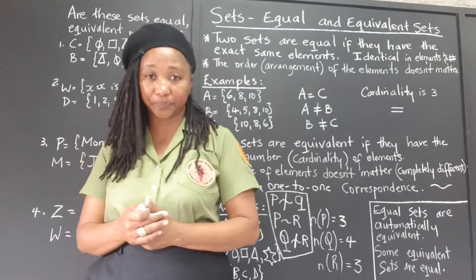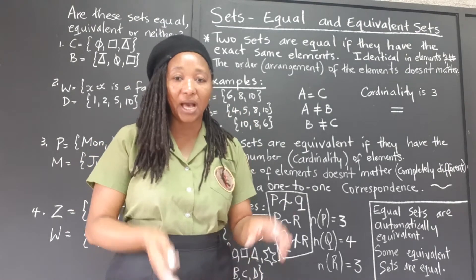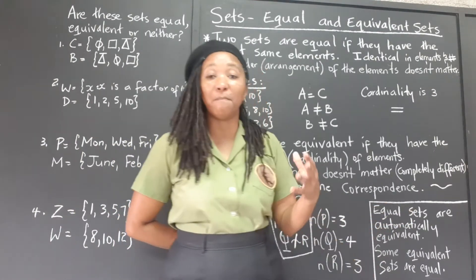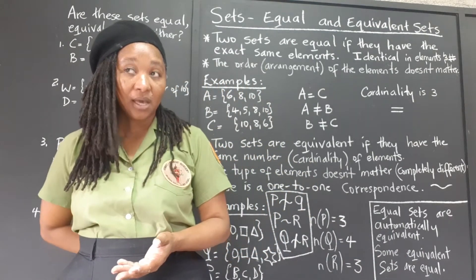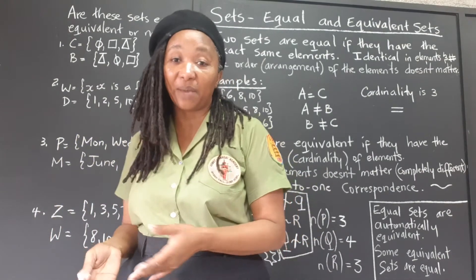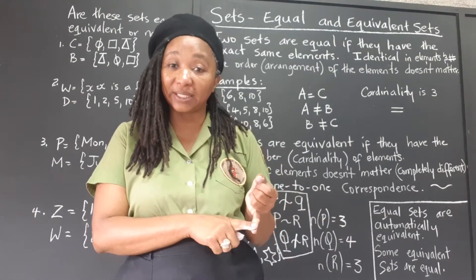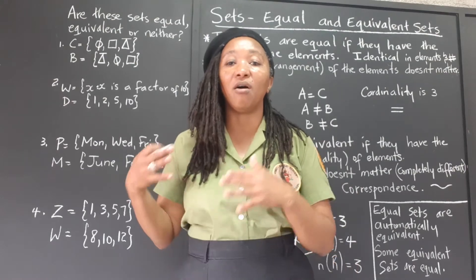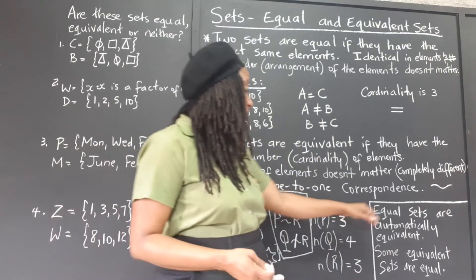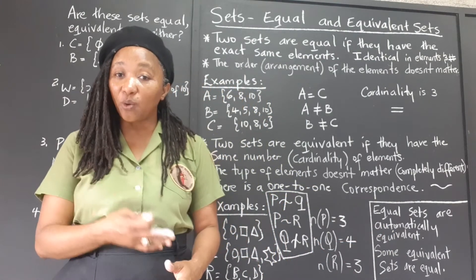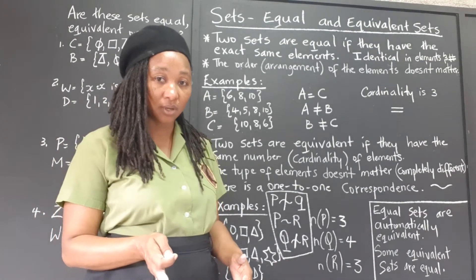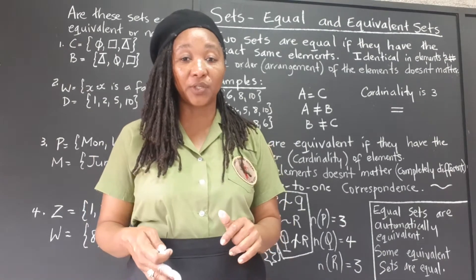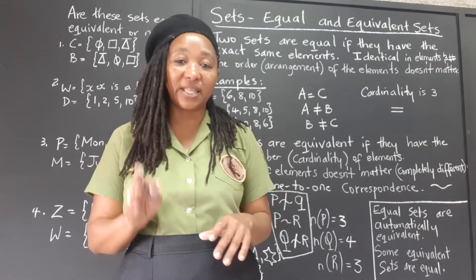What have we found then? For equal sets, they have to be exactly the same and have the same cardinality. That tells us that all equal sets are automatically equivalent. If two sets are equal, they are automatically equivalent because to be equal you must have the same number of elements in addition to being the exact same type. But are all equivalent sets equal? No — because they can have the same cardinality and the same number of elements, but the elements might not be the same type. So they can be equivalent and not equal, but once they are equal, they are equivalent.